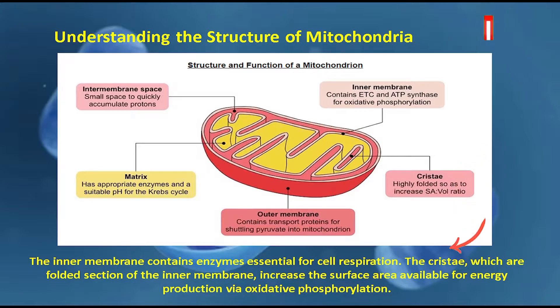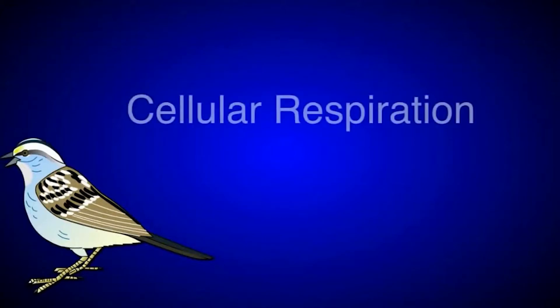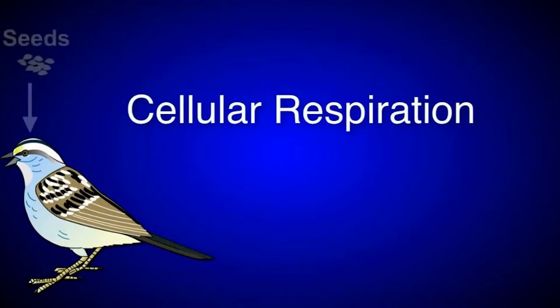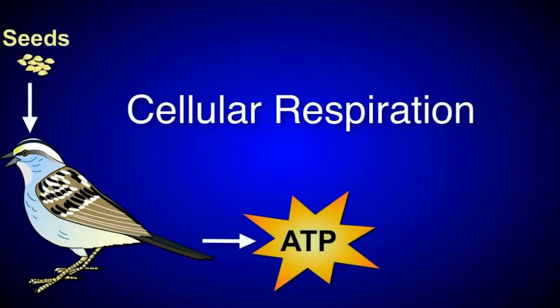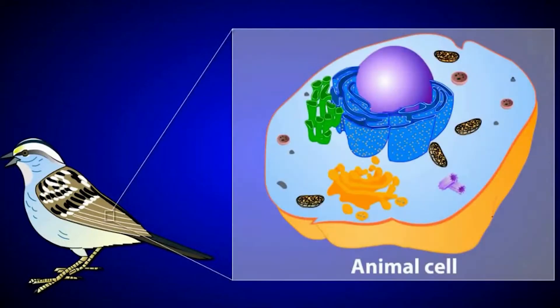This bird, like all living animals, has cells to carry out cellular respiration. During cellular respiration, organisms break down nutrients in order to produce energy in the form of ATP. We can see the mitochondria, where the majority of reactions involved in cellular respiration occur.